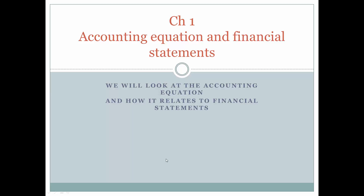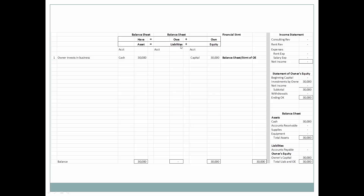We want to look at the accounting equation and how it interrelates with financial statements. We're using it to show how the accounting equation interrelates with financial statements. Here we have our accounting equation: assets are equal to liabilities plus equity. What we have, our assets, is equal to what we owe and what we own.